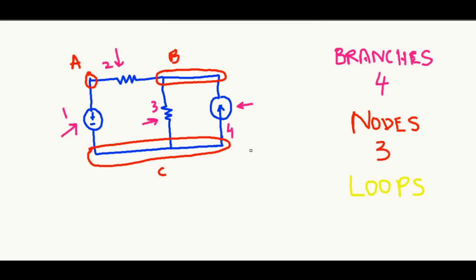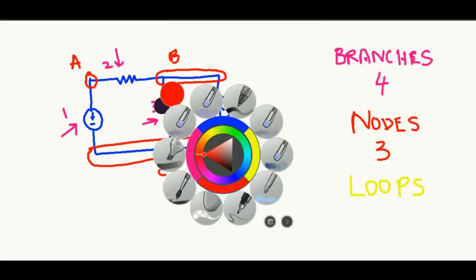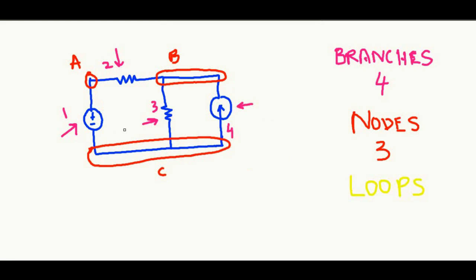How many loops are there? A loop is defined as a closed path in a circuit through which a current flows without any breaks. If a current starts from here it will go all the way back — that is loop X, the first one. Then if current flows through the second path, we have loop Y. Altogether we have two loops.